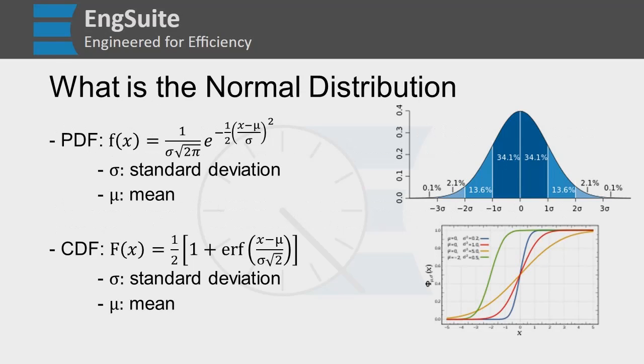The normal distribution is sometimes called a bell curve or a Gaussian distribution. And there are two main distributions that we care about regarding the normal distribution.